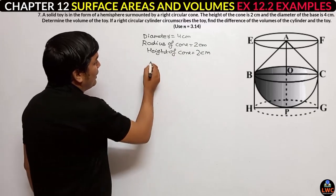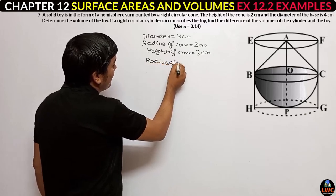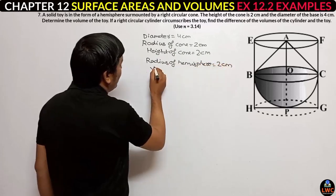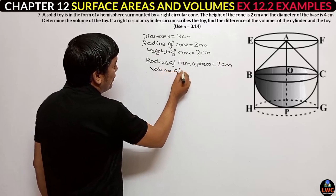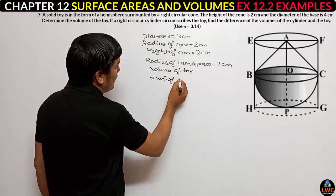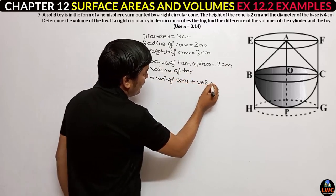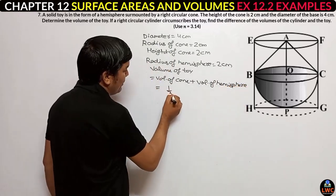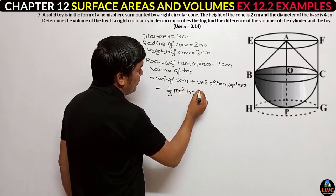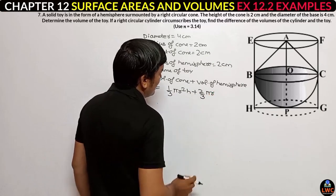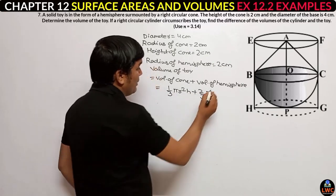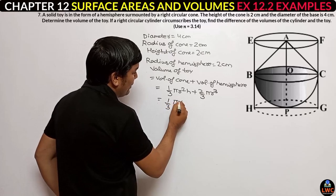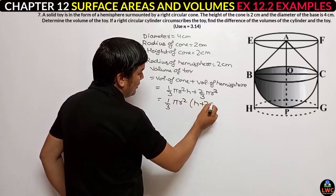The radius of the hemisphere is also the same radius. The volume of the toy equals the volume of the cone plus the volume of the hemisphere. Volume of cone is (1/3)πr²h and volume of hemisphere is (2/3)πr³. Taking (1/3)πr² common, we get h + 2r.